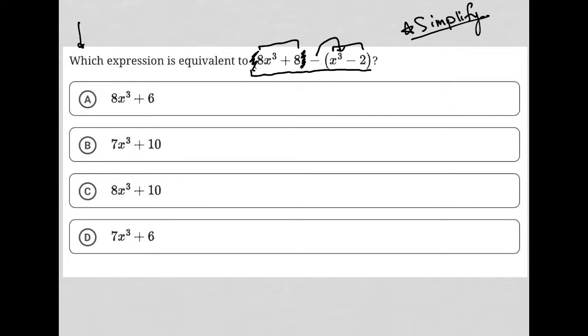And I can distribute this negative sign across the second set of parentheses, which also allows me to get rid of these parentheses. And then I can combine like terms.